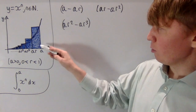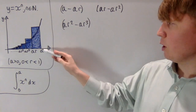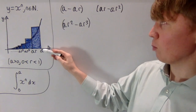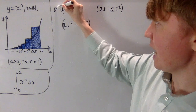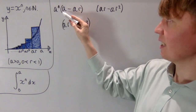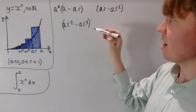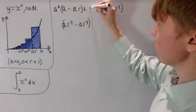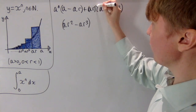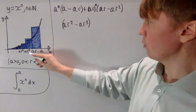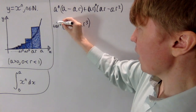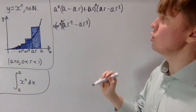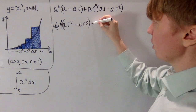So how do we find the area of all of these rectangles and evaluate this sum? The first one has width A minus AR and height x to the n evaluated at x equals A, so y is just A to the power of n. The area of this first rectangle is A to the n times A minus AR. For our second rectangle the height is AR to the power of n, and for the third rectangle we've got AR squared to the power of n for the height and AR squared minus AR cubed as the width.